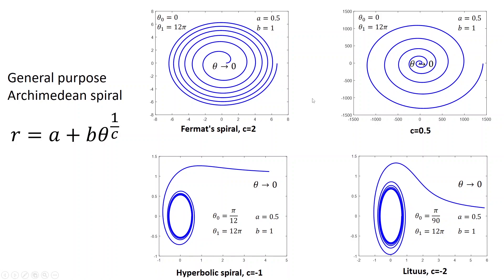These are two examples. This one also has a name, it's Fermat's spiral, when c is equal to 2.